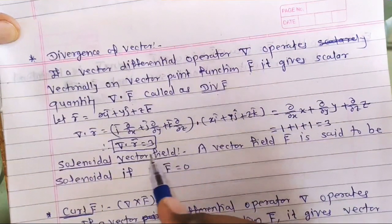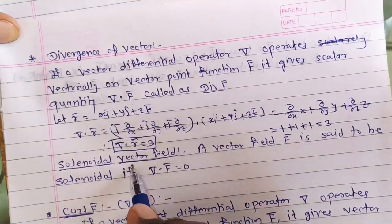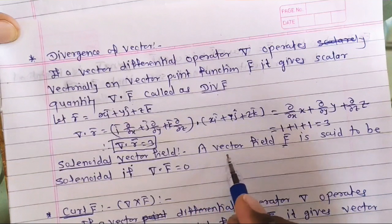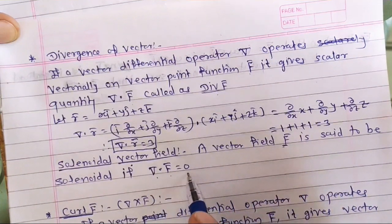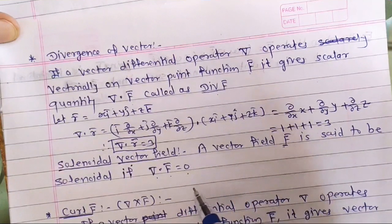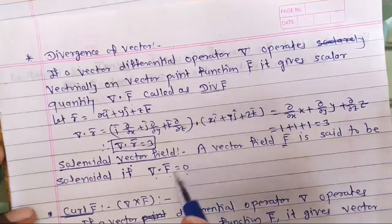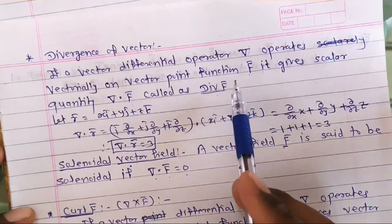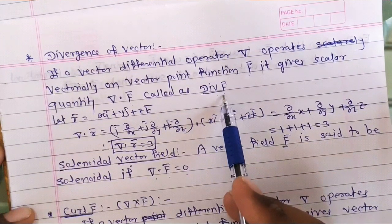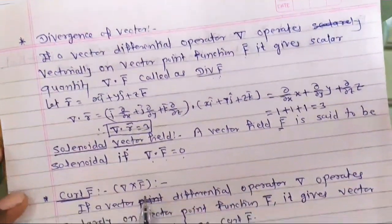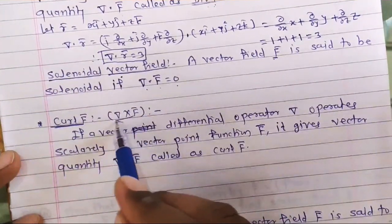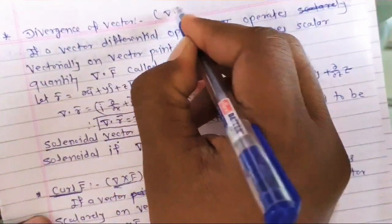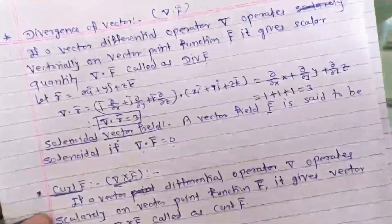Now, what is a solenoidal vector field? If F̄ is a given vector field and if we find the divergence of F̄ and get the value equal to zero, that is del dot F̄ = 0, then we say that F̄ is solenoidal. So divergence of F̄ is denoted by del dot F̄, and curl of F̄ is denoted by del cross F̄. This dot and cross distinction is very important.